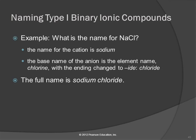We don't need to indicate the charges on type I metals because they're always the same — predictable from the periodic table. For example, NaCl: we look at the first element, ask is that a metal? Yes. Is it in group 1, 2, 3, zinc, or silver? Yes, it's in group 1A. So the charge is predictable and the name is sodium. The other element is chlorine — the non-metal — and she changes her name to chloride. So we write sodium chloride. Chemical names have a space between them and are not capitalized.